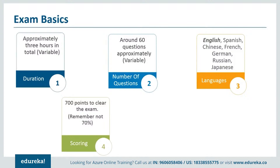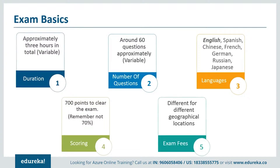What is the passing score? It is 700 points — not 70%. A particular question might have fewer or more points, so it is scored on a points basis rather than a percentage. The total points depend on how Azure judges your examination, so try to answer as many questions as possible. Exam fees depend upon your location; the standard fee is 165 US dollars. We'll discuss region-specific pricing when we look at the website.